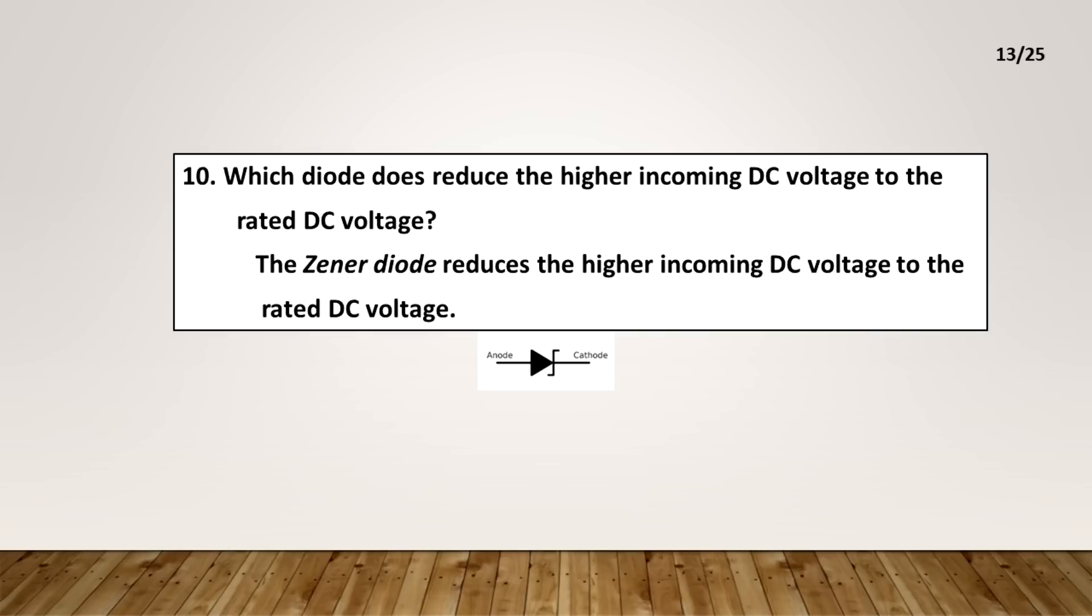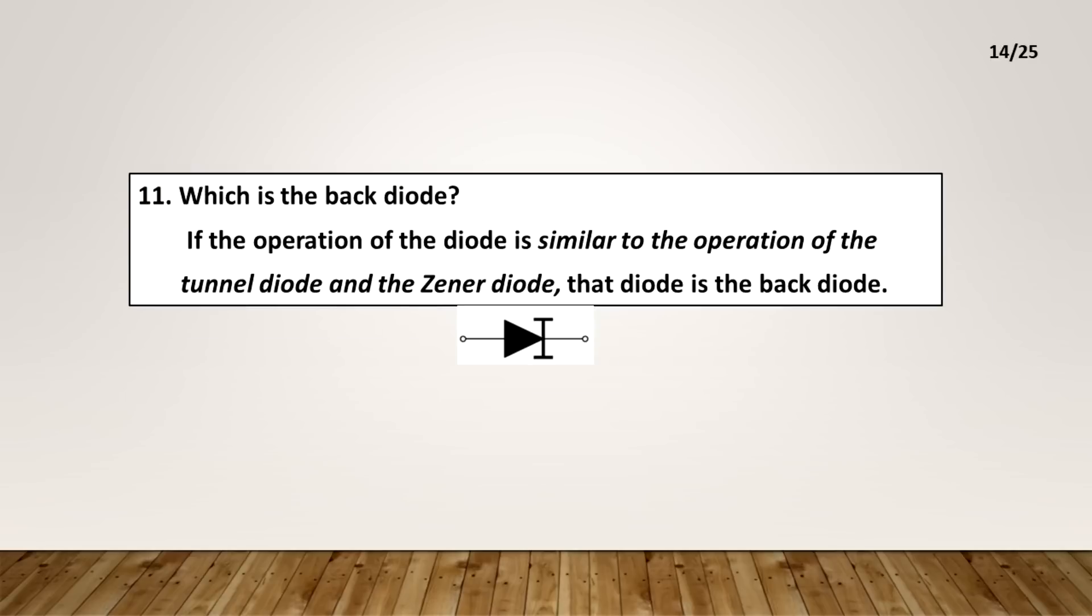The zener diode reduces the higher incoming DC voltage to the rated DC voltage. What is the back diode? If the operation of the diode is similar to the operation of the tunnel diode and the zener diode, that diode is the back diode.